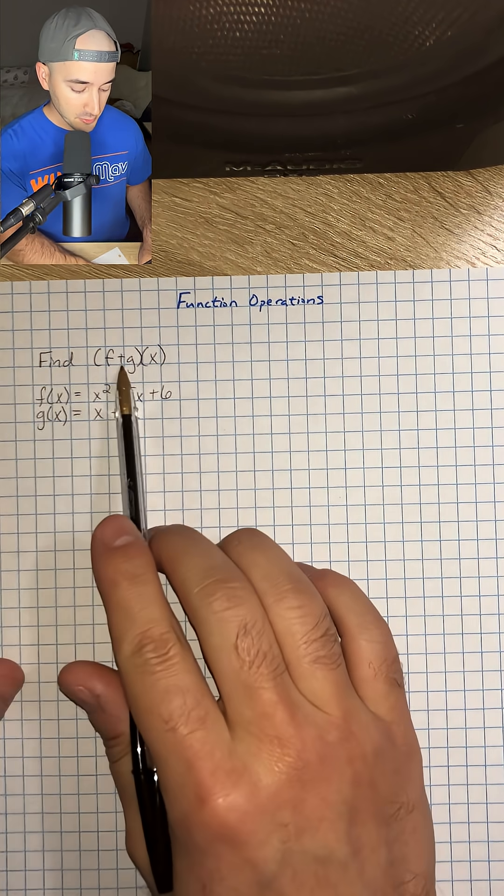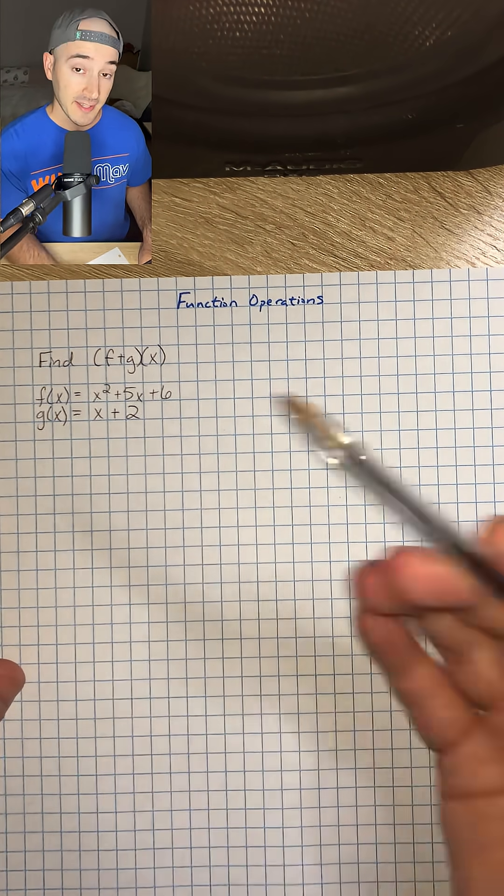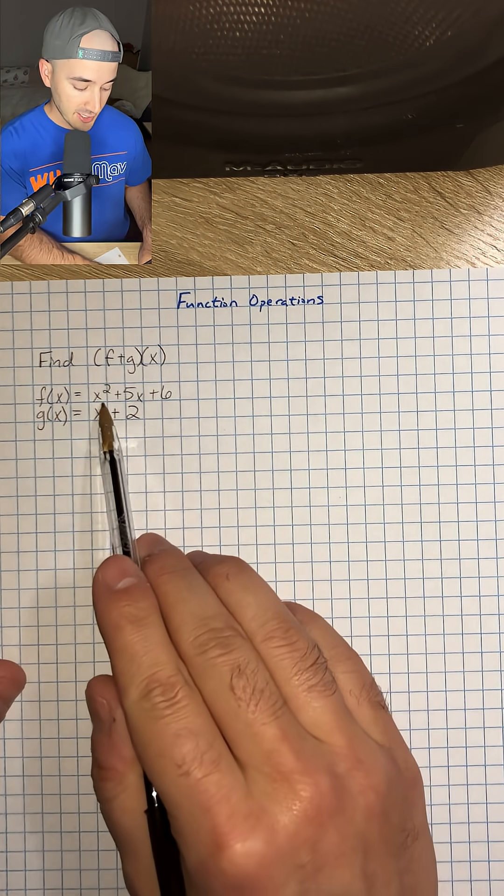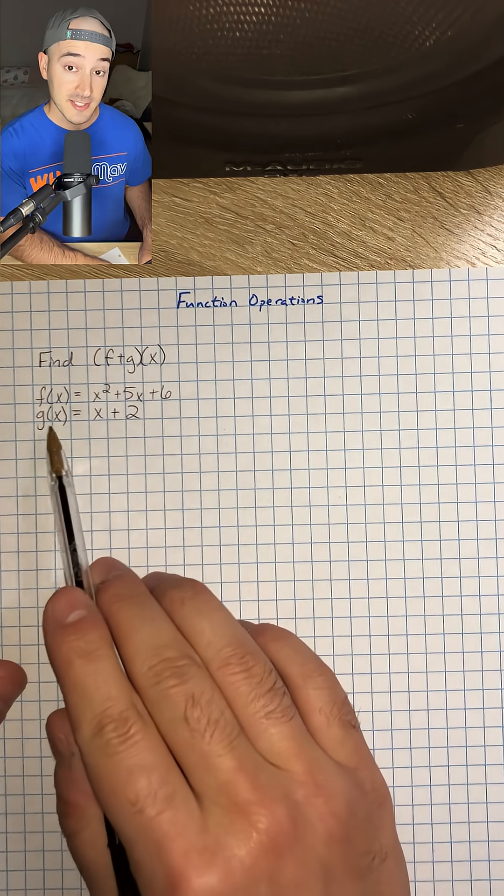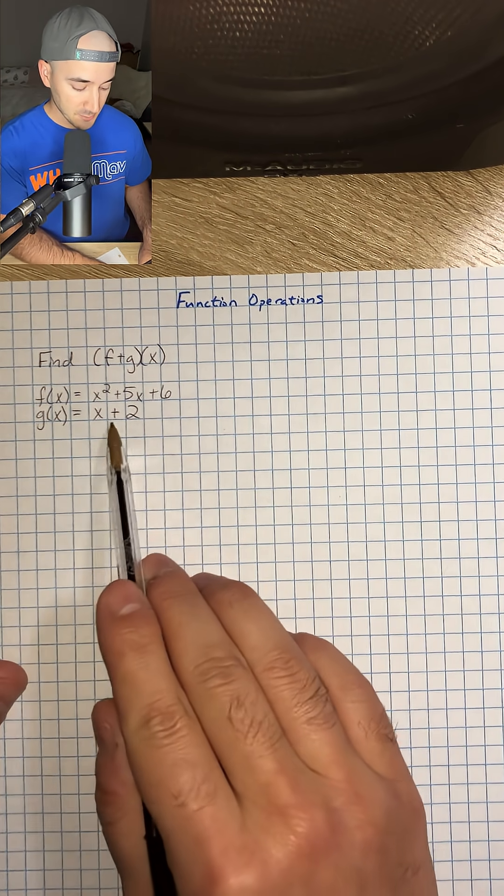We want to find f plus g of x, and they give us f of x is equal to x squared plus 5x plus 6, and g of x is equal to x plus 2.